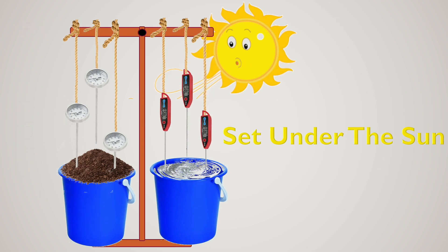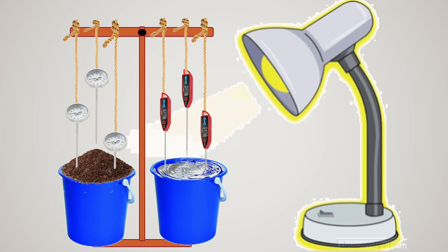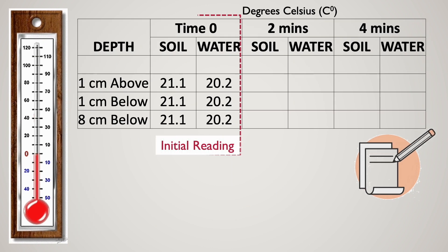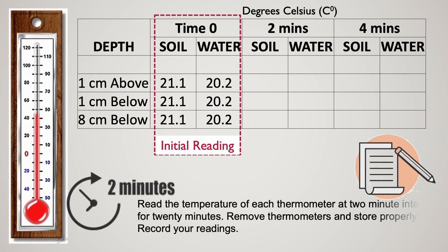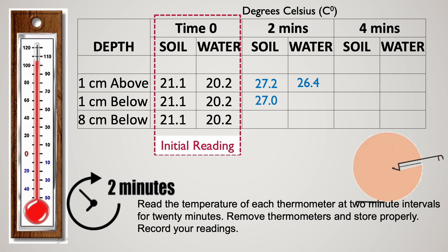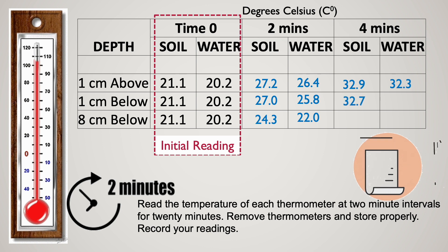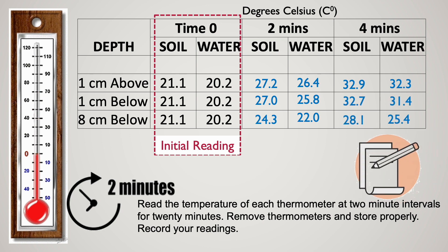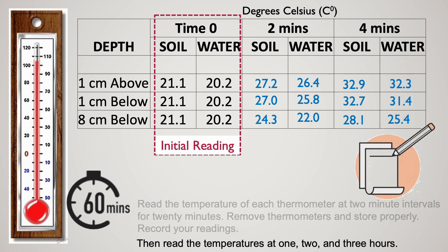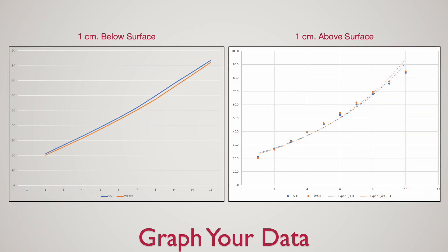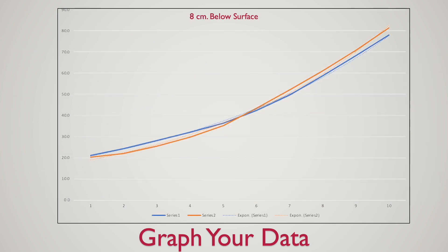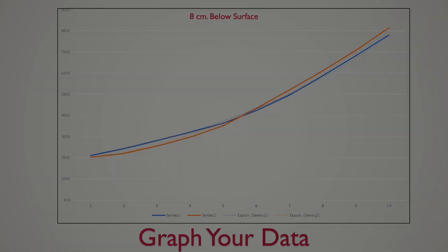Now set it under the sun — but for this demonstration we will be using a heating lamp and do this activity indoors. Read the temperature of each thermometer at two-minute intervals for 20 minutes. Record your readings in your data sheet, and carefully return the thermometers to their original place. After your final reading on the 20th minute, read the temperatures again at one, two, and three hours. When done, present your data in graphical form: place the time variable on the x-axis and the temperature reading on the y-axis.